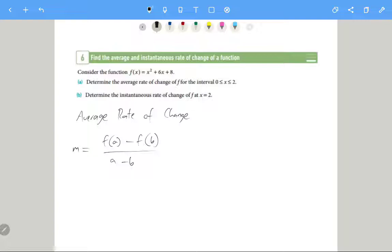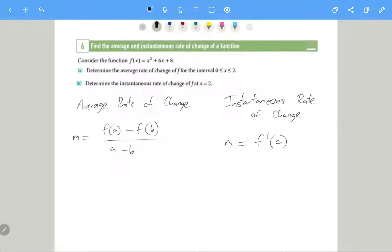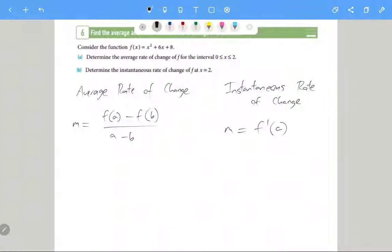And we also have the instantaneous rate of change, which we can work out just by calculating the derivative at the point itself, so f dash of a. Alright, so let's have a look at comparing the two different answers we're gonna get.